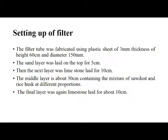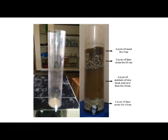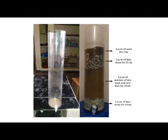Setting up of filter: The filter tube was fabricated using a plastic sheet of 3 mm thickness, height 60 cm and diameter 150 mm. The sand layer was laid on top for 5 cm. The next layer was limestone of 10 cm. The middle layer was 30 cm containing a mixture of sawdust and rice husk at different proportions. The final layer was again limestone of 10 cm. The figure clearly shows the filter setup: bottom layer of limestone 10 cm, middle layer of mixed sawdust and rice husk of 30 cm, top layer of limestone 10 cm, and a sand layer of 5 cm.